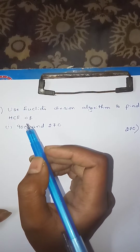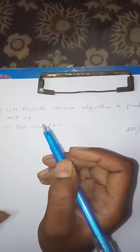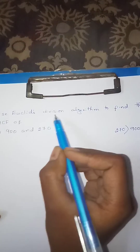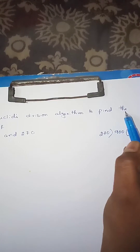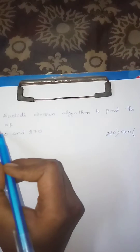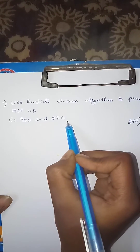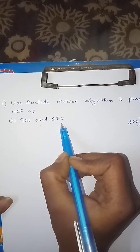Let's do the first problem. Exercise 1.1, first problem: Use Euclid's division algorithm to find the HCF of 900 and 270.